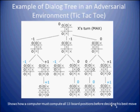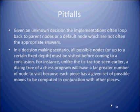There are some pitfalls to a dialogue tree. Given an unknown decision, the implementations often loop back to parent nodes or a default node, which are not often the appropriate answers. In a decision-making scenario, all possible nodes, or nodes up to a certain fixed depth, must be visited before coming to a conclusion. For instance, unlike the tic-tac-toe example earlier, a dialogue tree of a chess game will have a far greater number of nodes to visit, because each piece has a given set of possible moves to be computed in conjunction with other pieces.